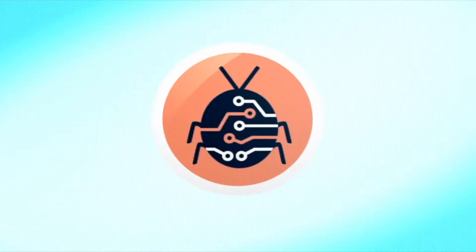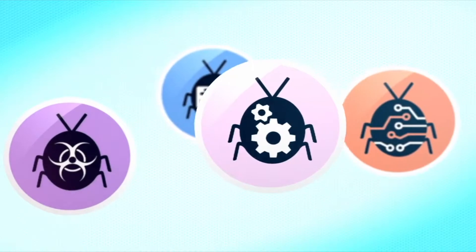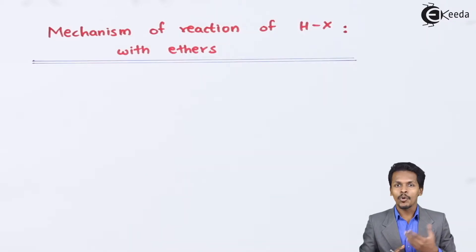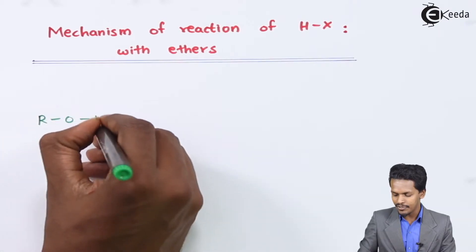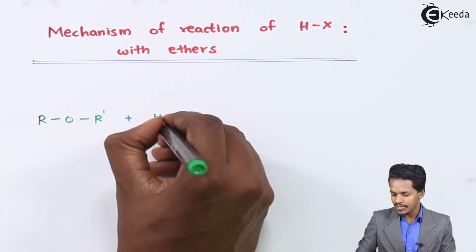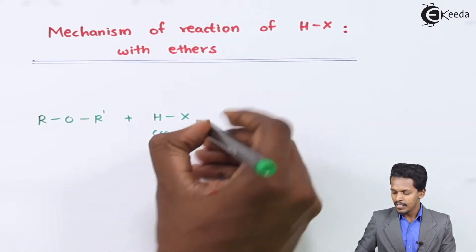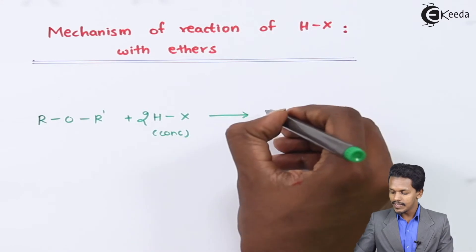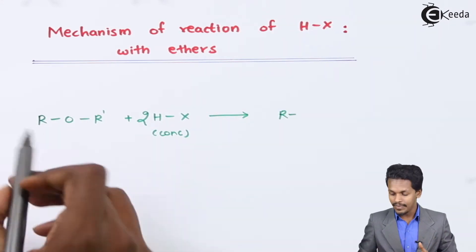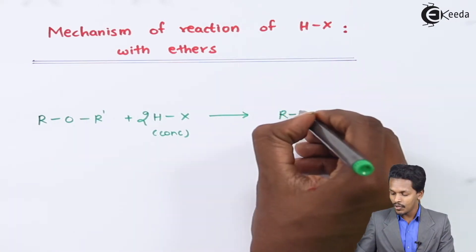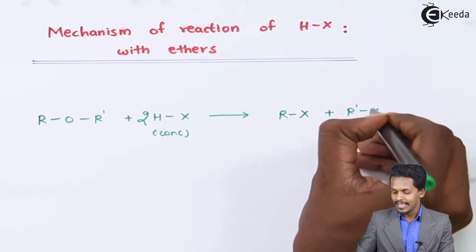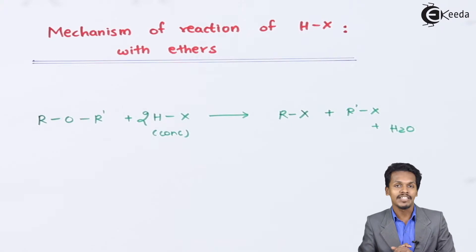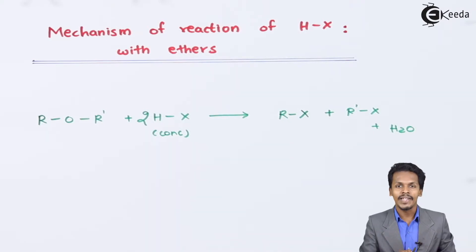Let us discuss the general reaction. We consider R-O-R' treated with concentrated HX solution. Using two moles of HX, the products we get are two moles of RX if R and R' are the same, or one RX and one R'X along with water as a byproduct. This is the general action of hot HX on ether.